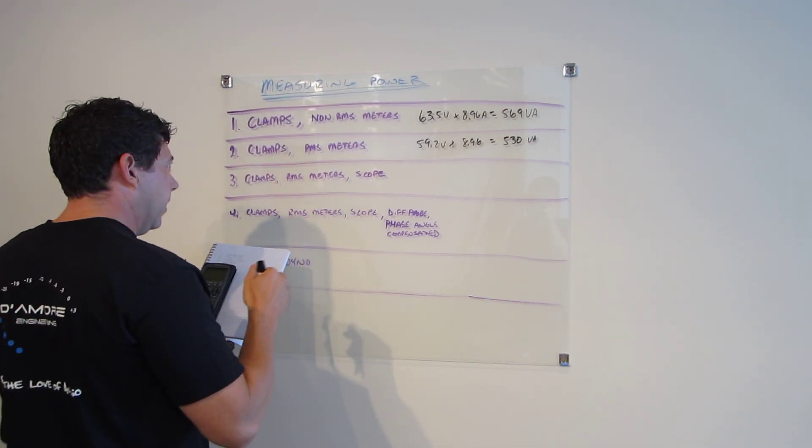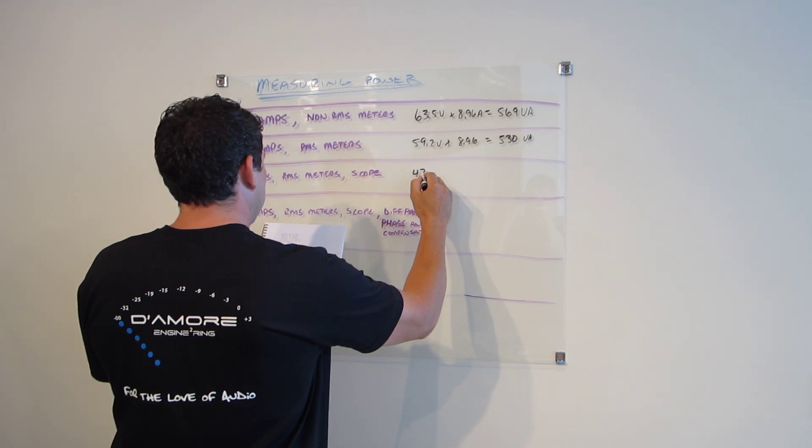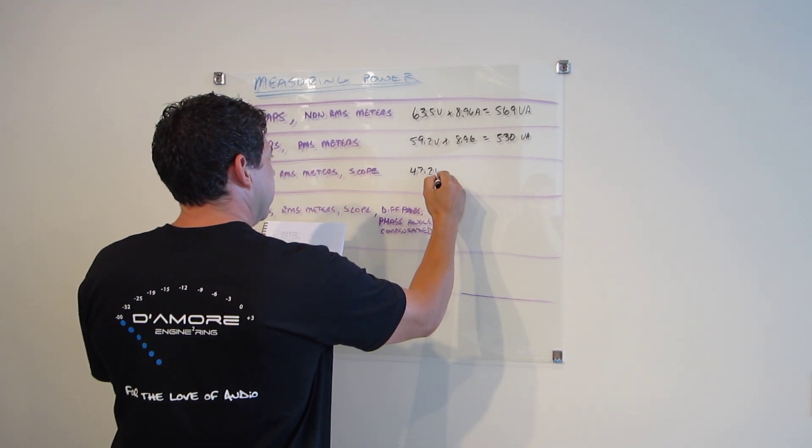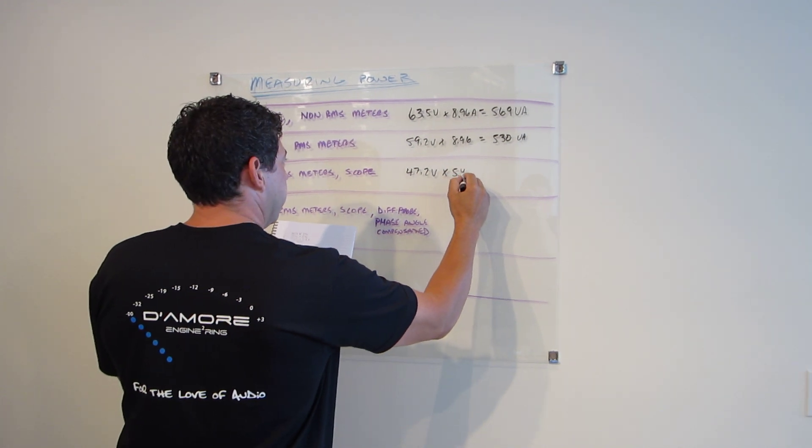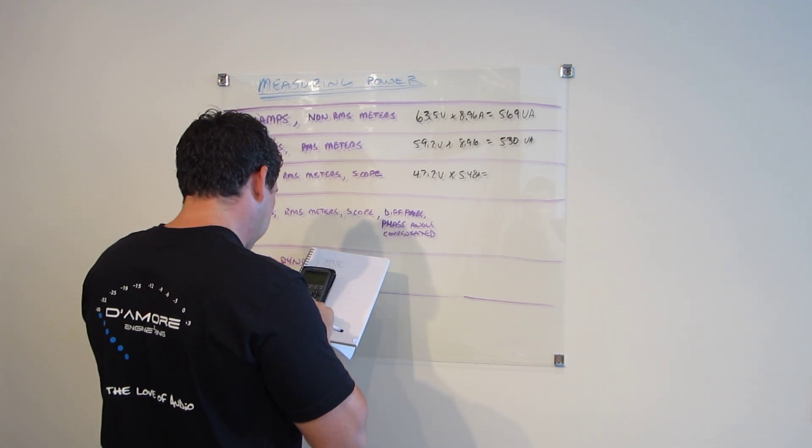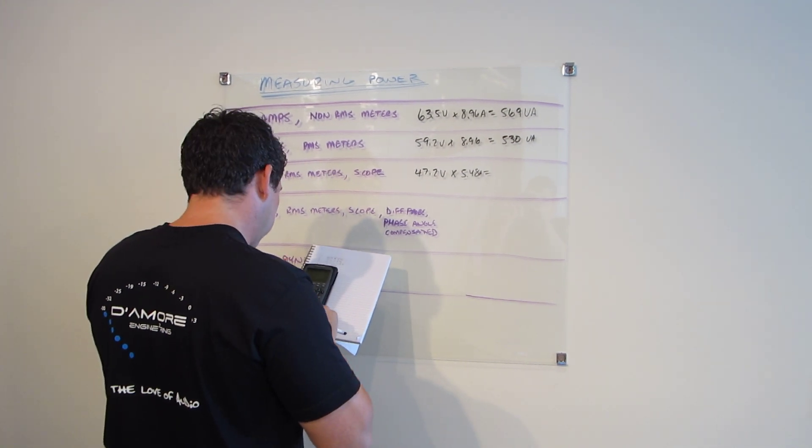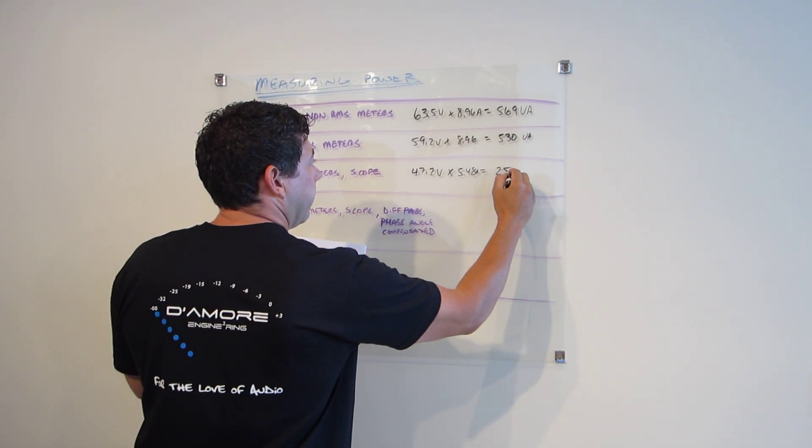Using the scope measuring the actual usable clean signal with the true RMS meters we got 47.2 volts, 5.48 amps, 258 VA.